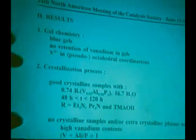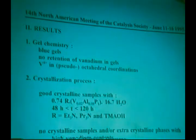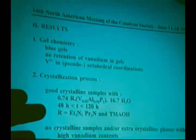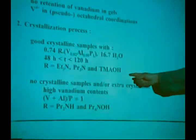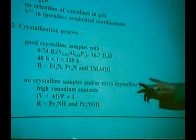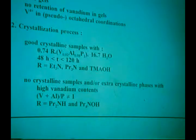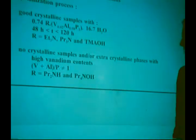I want to summarize the crystallization process. You can obtain good crystalline VAPO5 samples when using the following gel composition and applying synthesis time between 48 and 120 hours, and by using these three templates—the best of these two and to a lesser extent the tetramethylammonium hydroxide. No crystalline samples or the formation of extra crystalline phases were obtained when using high vanadium contents, and when the ratio vanadium plus aluminum over phosphorus was deviating from one in the initial gel, and when using these template molecules.